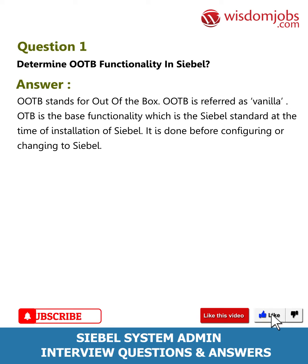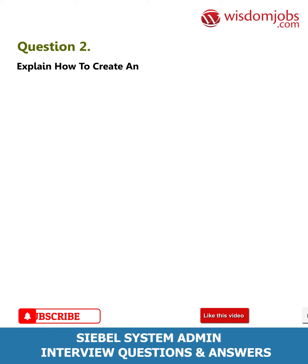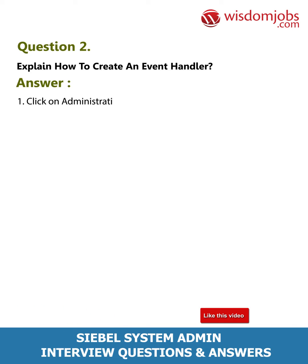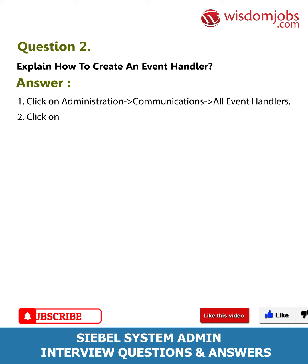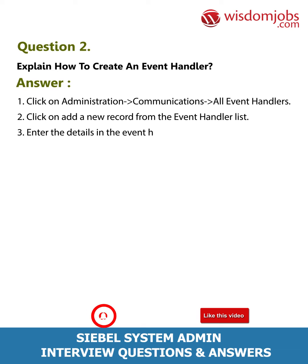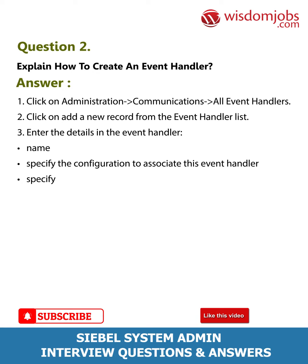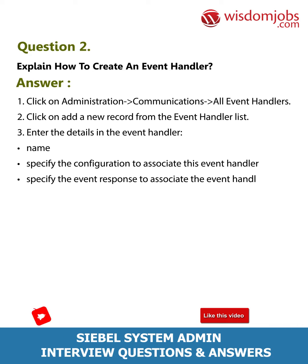Question 2: Explain how to create an event handler. Answer: 1. Click on Administration > Communications > All Event Handlers. 2. Click on 'Add a new record' from the event handler list. 3. Enter the details in the event handler name, specify the configuration to associate this event handler, and specify the event response to associate the event handler.